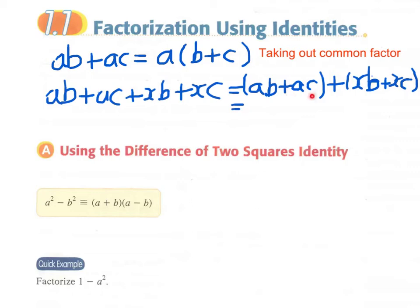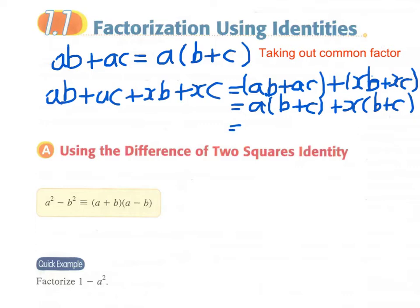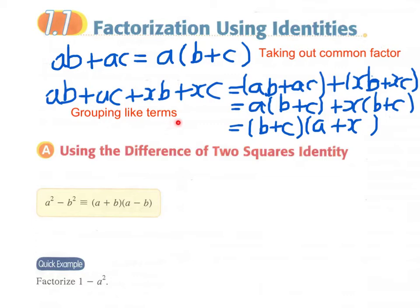We take out the common factor a to get a(b plus c), and the other common factor x to get x(b plus c). Now we have another common factor (b plus c), so we write the final answer as (b plus c)(a plus x). We call this method grouping like terms.